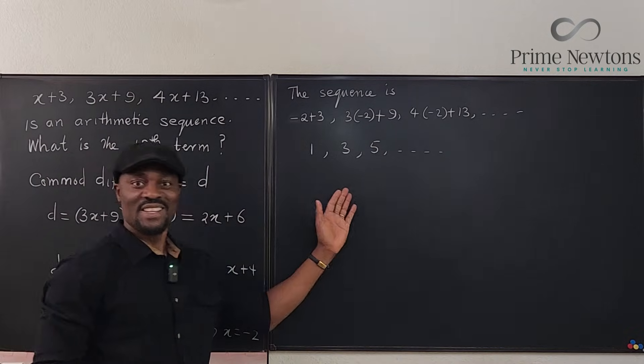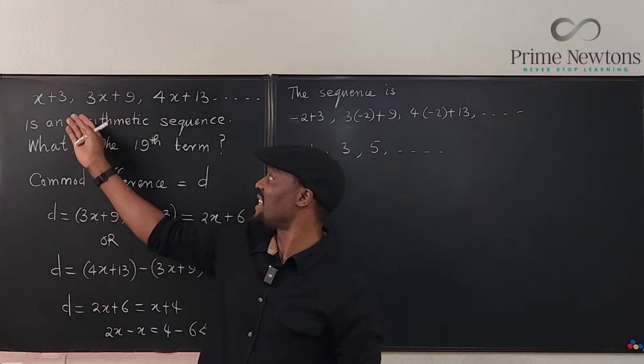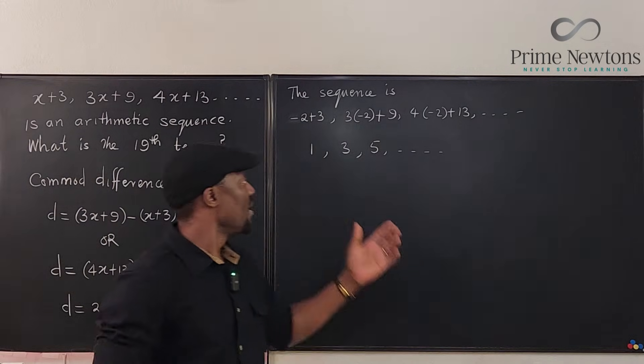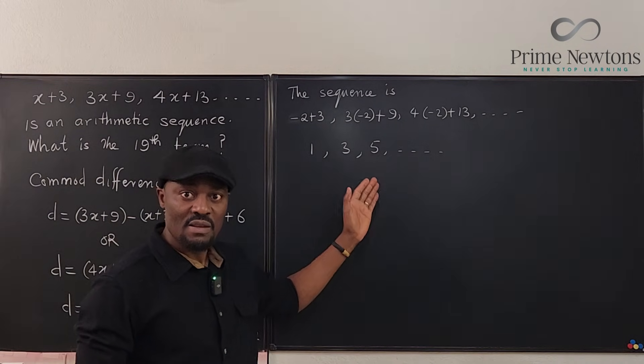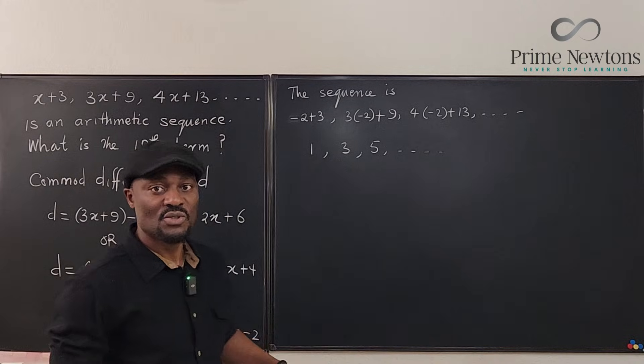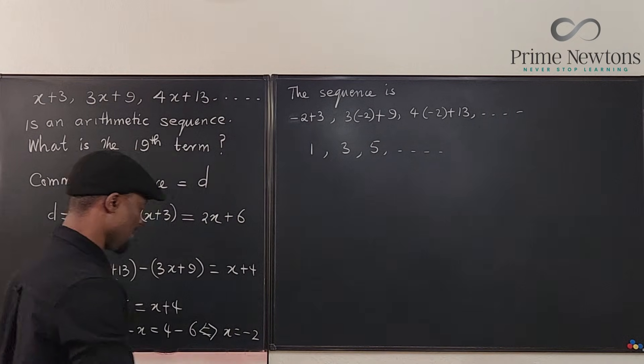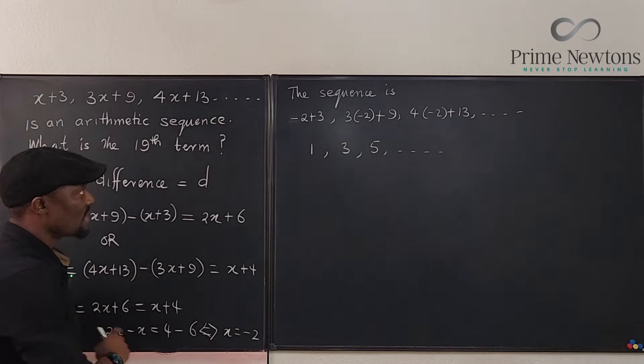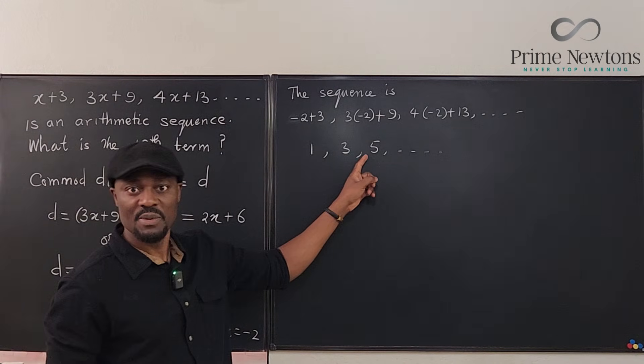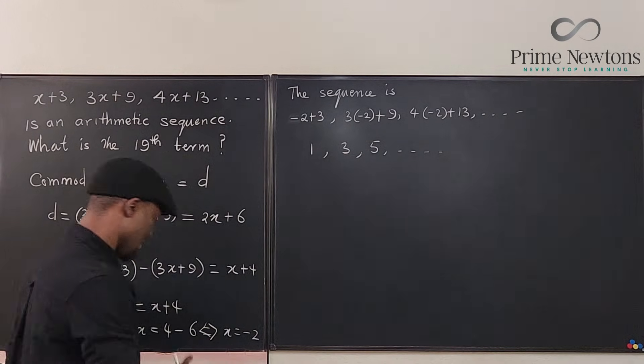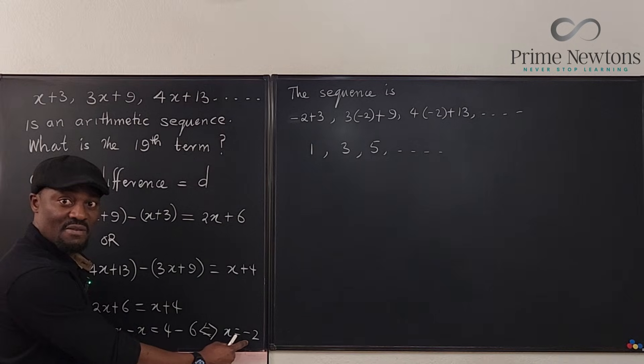So now clearly the sequence that was disguised in this algebraic expression was 1, 3, 5. We know what the next term is. So easily we know the first term and we know the common difference. What's the common difference? Well, clearly the common difference is 2, not negative 2. This is just the value of x.